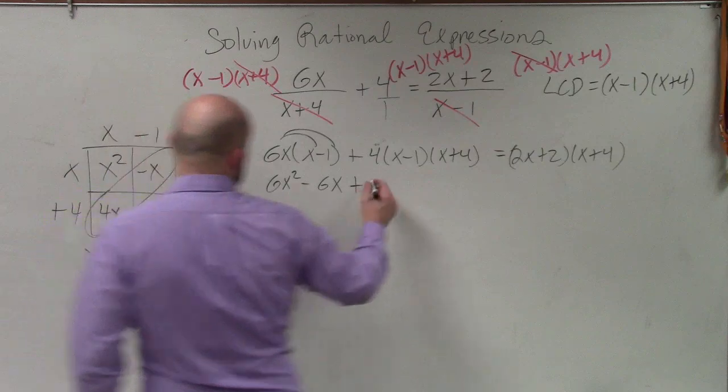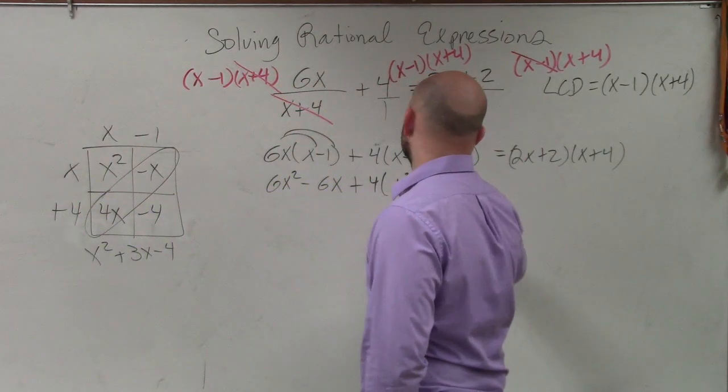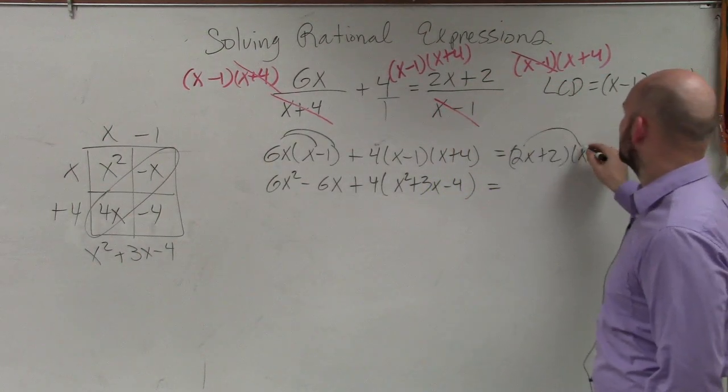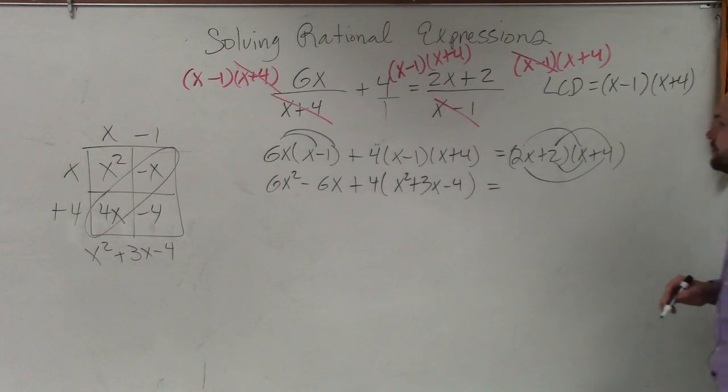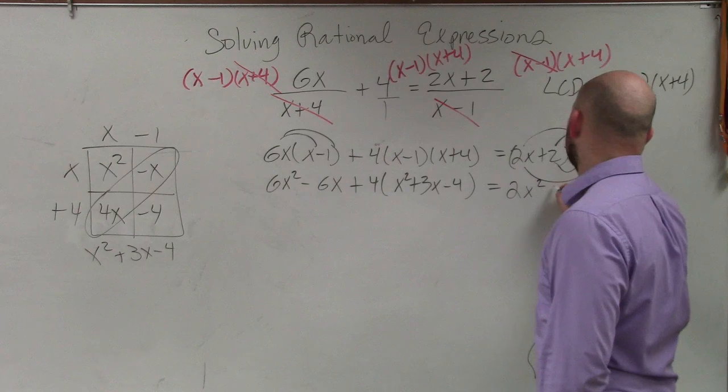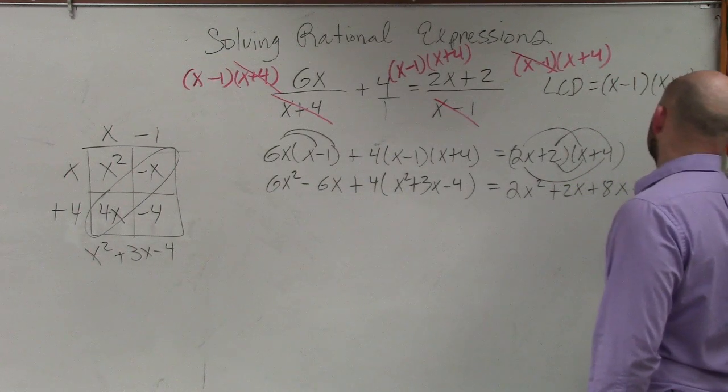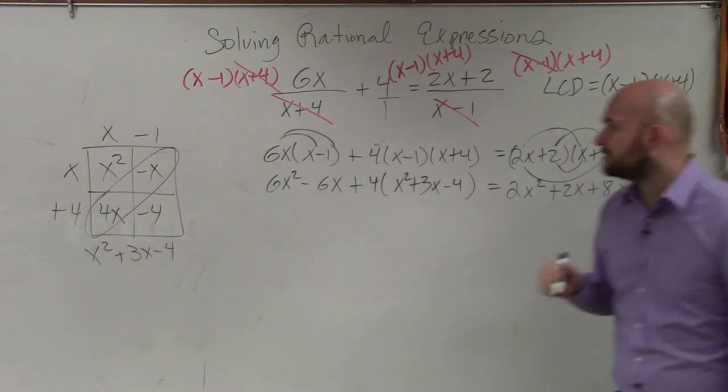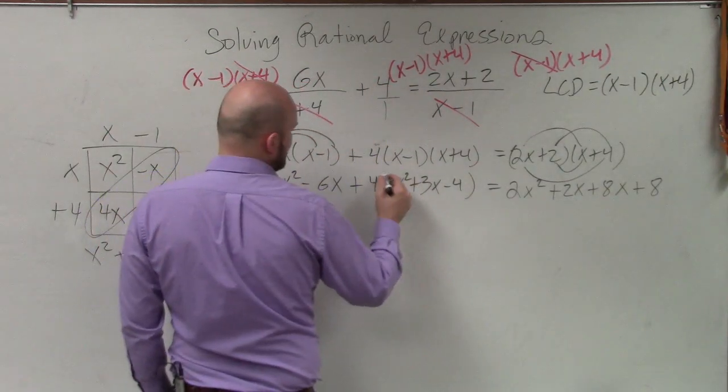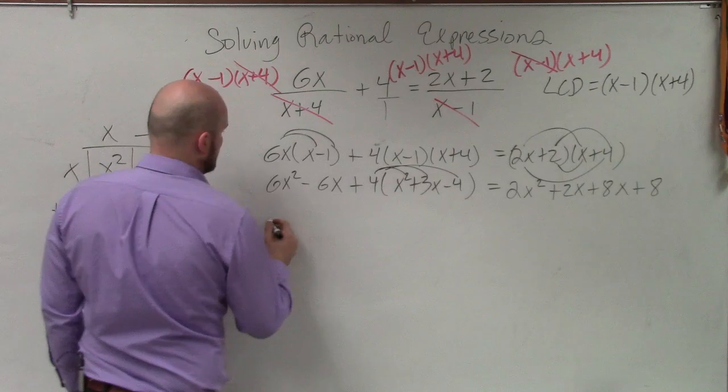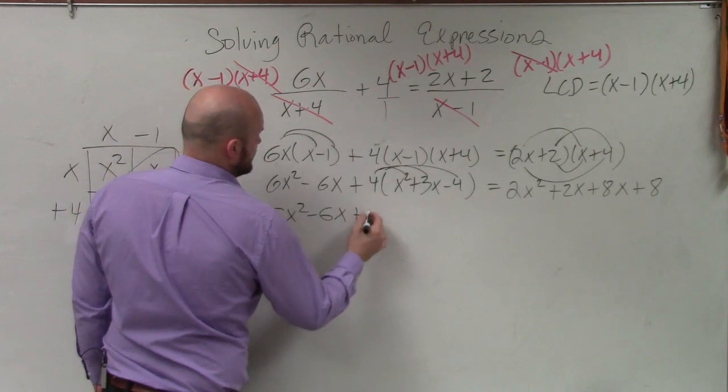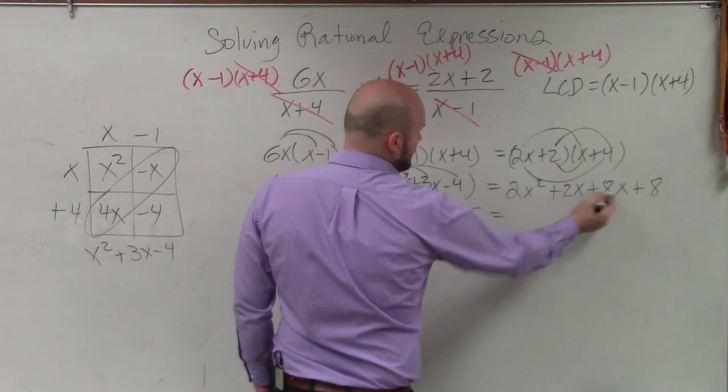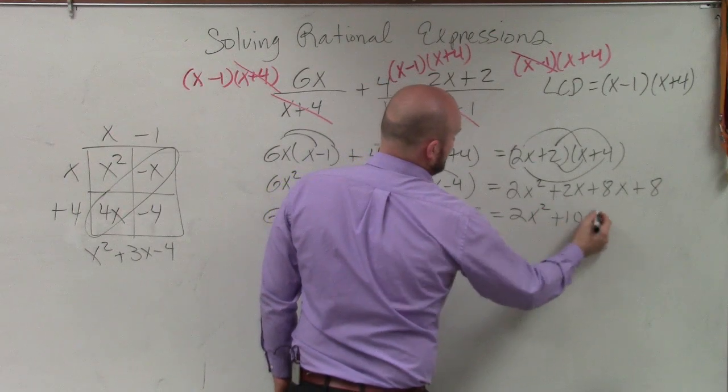Then, if I distribute that, so that's basically 4 times x squared plus 3x minus 4. Equals here, I've got to multiply these now. I'll just do this by doing FOIL. So here I have 2x squared plus 2x plus 8x plus 8. So I did the box method. Over here, I just did FOIL. By combining, let's go ahead and distribute here.